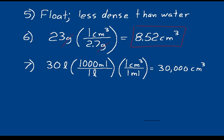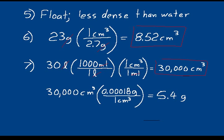In problem 7, figure out how much 30 liters of helium weighs. First convert liters to cubic centimeters: 1,000 milliliters per liter times 1 cubic centimeter per milliliter gives 30,000 cubic centimeters. Then use the density of helium — 0.00018 grams per cubic centimeter — as a unit multiplier. Cubic centimeters cancel, giving 5.4 grams. So about 8 gallons of helium weighs only 5.4 grams.